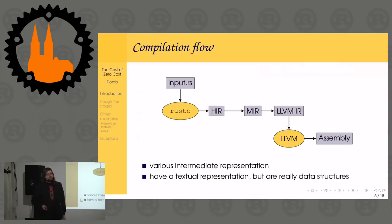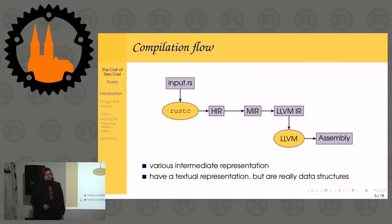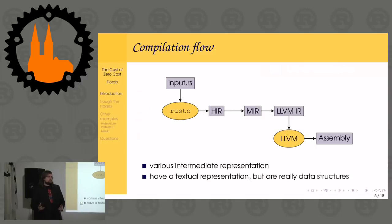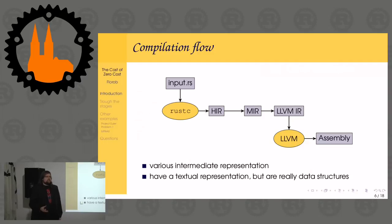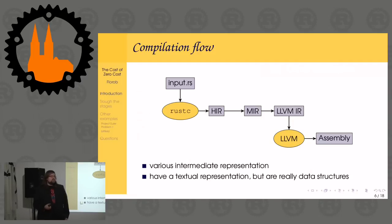Then we go down to the mid-level intermediate representation, which is still fairly new, a bit lower level, and actually expands a lot of the constructs in Rust out to simpler things - it can do some things the surface syntax of Rust cannot. That is then translated into LLVM IR, the intermediate representation that LLVM has, which is the compiler backend Rust uses to actually generate assembly code.